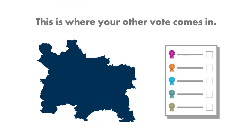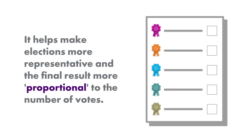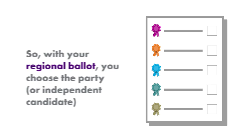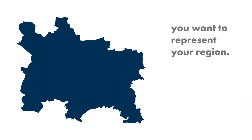This is where your other vote comes in. It helps make elections more representative and the final result more proportional to the number of votes. So with your regional ballot, you choose the party or independent candidate you want to represent your region.